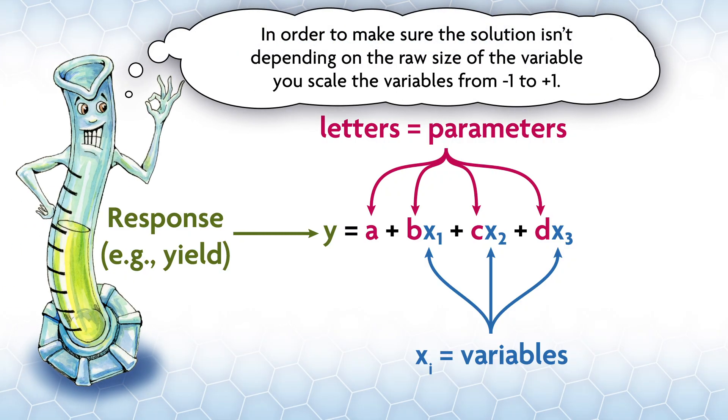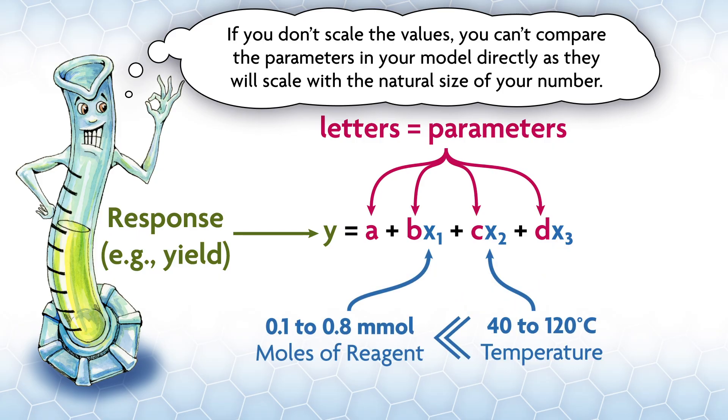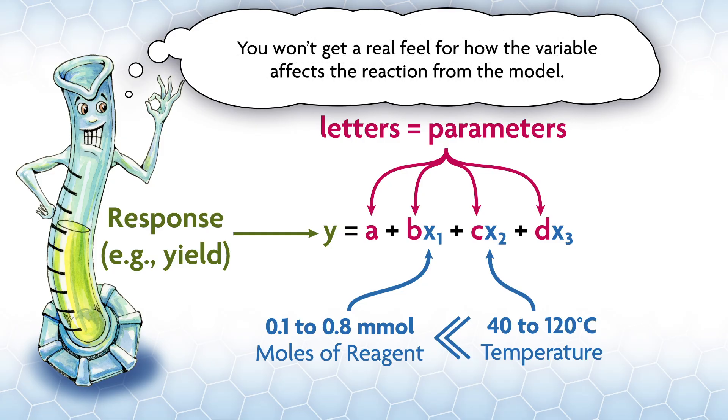In order to make sure the solution isn't depending on the raw size of the variable, you scale the variables from minus one to plus one. If you don't scale the variables, you can't compare the parameters in your model directly as they will scale with a natural size of your number. For example, if you're using, say, 0.1 to 0.8 millimoles of a reagent and using that as a variable, if you don't scale, then you could be comparing that with raw temperatures that run from 40 to 120 degrees C, orders of magnitude larger. You won't get a real feel for how the variables affect the reaction from the model without scaling.